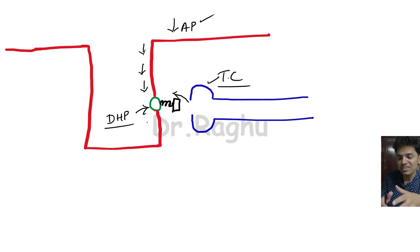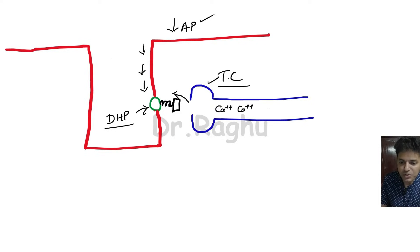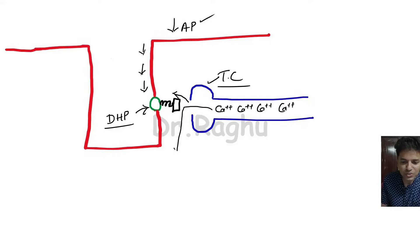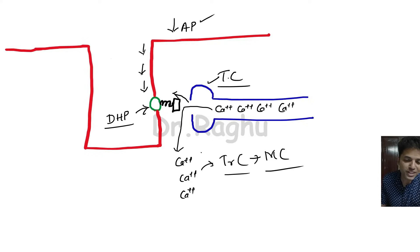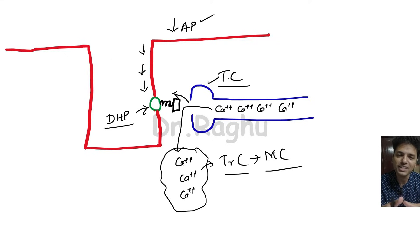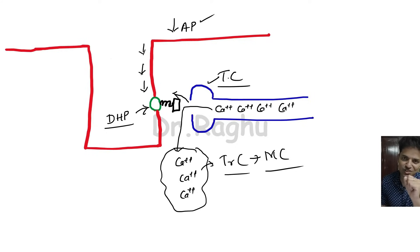Once the calcium release channels open, calcium from inside the sarcoplasmic reticulum — where there is a heavy concentration — is released out and enters into the sarcoplasm. This calcium binds to troponin C and triggers muscle contraction. Calcium is therefore acting as the coupling agent between excitation and contraction, which is why this process is called excitation-contraction coupling.